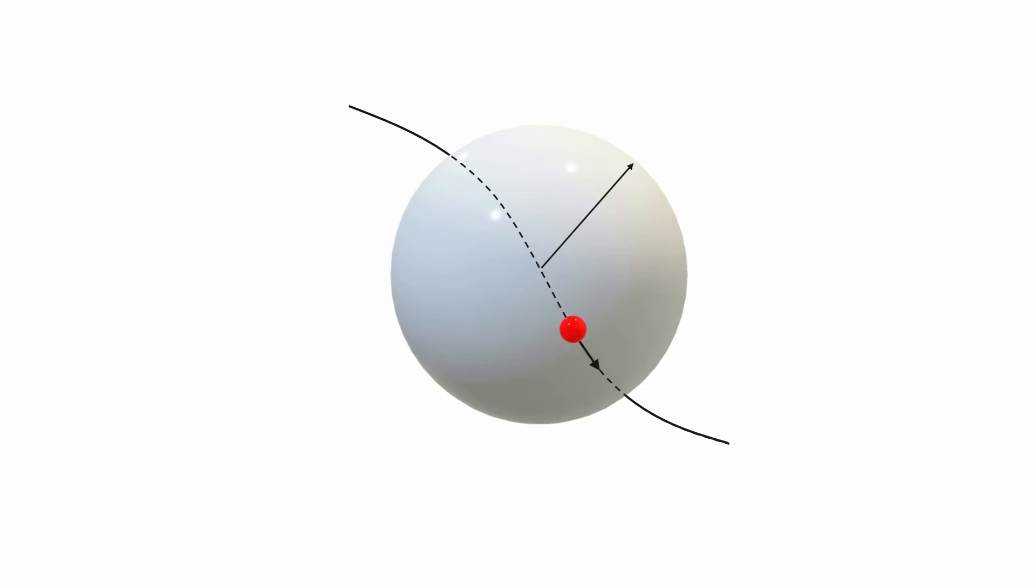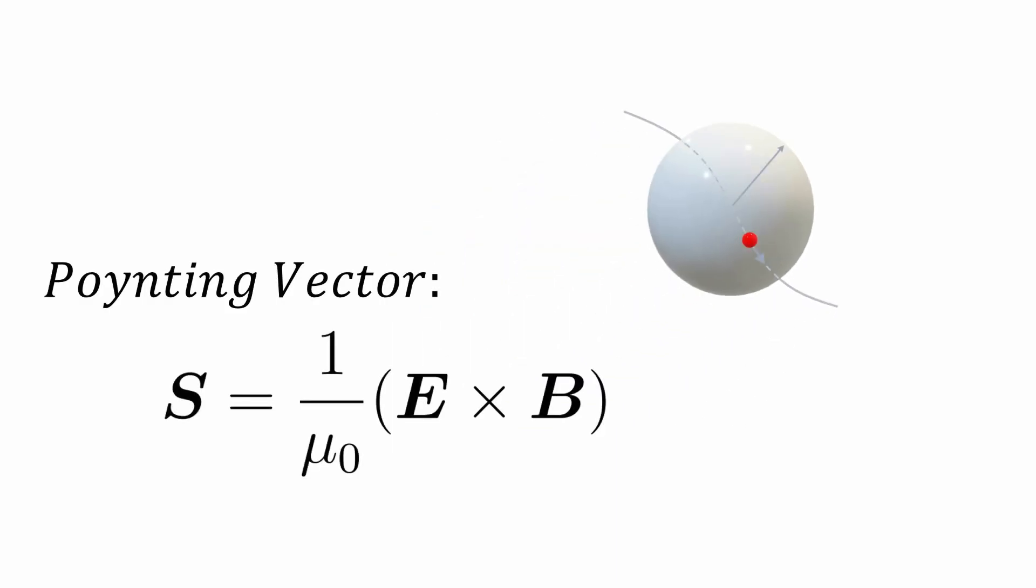Let us now find an expression for the rate at which the energy is being radiated by the charge. We first consider the Poynting vector, which is the directional energy flux, or in other words, the energy transfer per unit area per unit time.